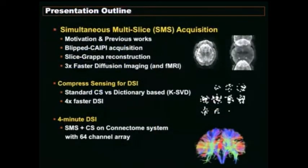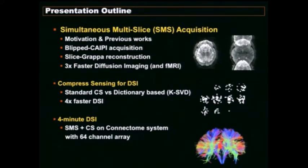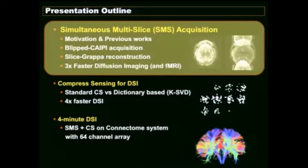Here's the presentation outline. First, I'll discuss simultaneous multi-slice acquisition and this method of parallel imaging to speed things up for diffusion imaging and fMRI by a factor of three. Then we'll talk about compressed sensing specifically for diffusion spectrum imaging, trying to use it to speed things up by another factor of four. Finally, we'll combine these two methods with data acquired on the connectome system with the 64-channel array coil to achieve about four minutes acquisition for diffusion spectrum imaging.